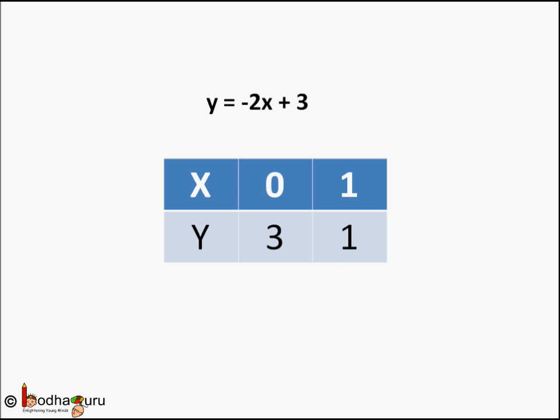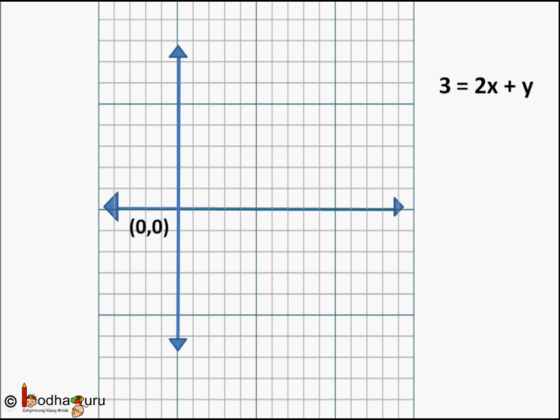Let us draw the graph of this equation. On graph paper, first draw the two axes x and y perpendicular to each other. Mark the meeting point O as (0,0).